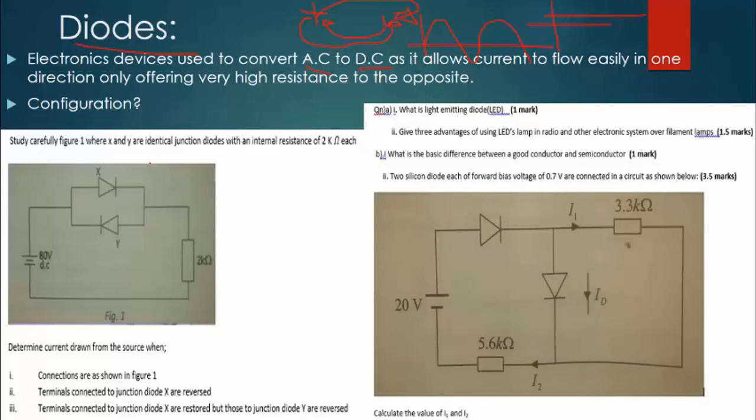Kwa sababu na enyewe ni passive component. Kwa tutafanya mifano tu direct. Lakini principle ni kama ile ile ya resistors. Na principle wa kusofu maswa liyaki ni kwa kutumia kichos laws. So, study careful figure one. Where X and Y are identical junction diodes. X and Y are identical junction diodes. So that these two diodes are identical. With internal resistance of 2 kilo ohms each. Each has 2 kilo ohms. The first question you asked here. Determine the current drawn from the source. When connections are shown in figure one.